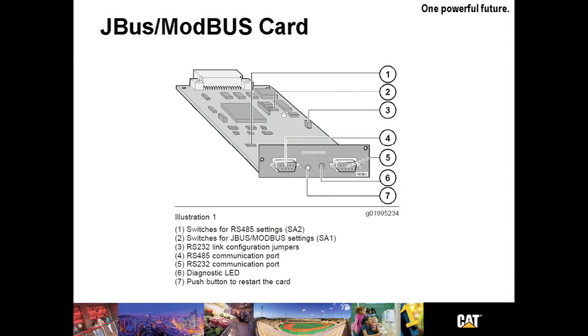The JBUS Modbus card provides UPS states and measurements in JBUS or Modbus protocols. The JBUS hexadecimal or Modbus RTU protocols are used in slave mode. The system provides a communication channel with an RS-485 or RS-232 interface.